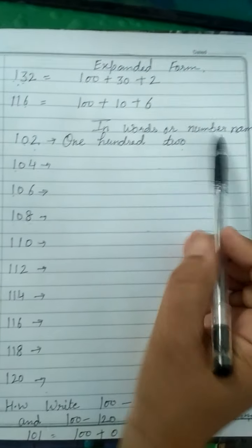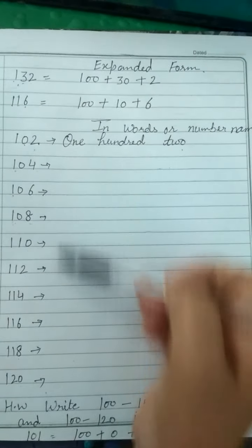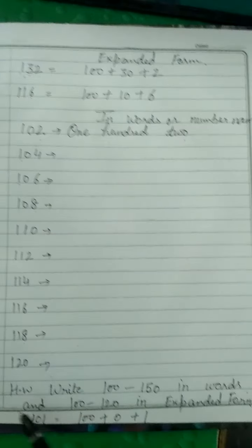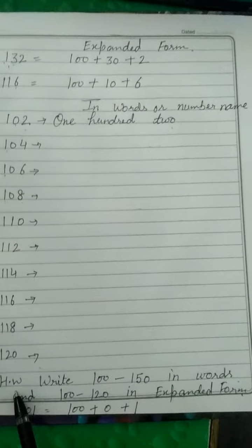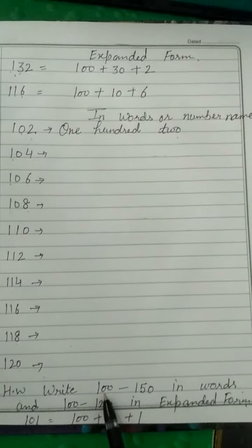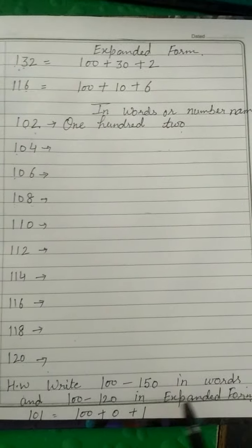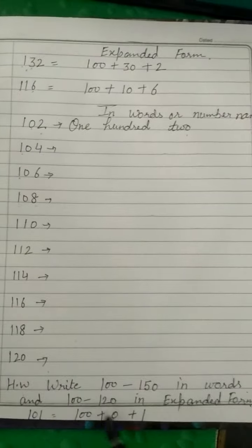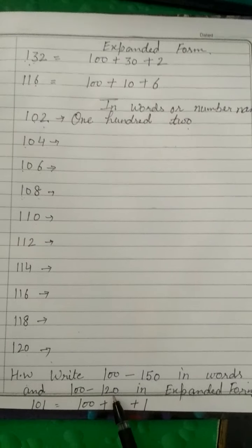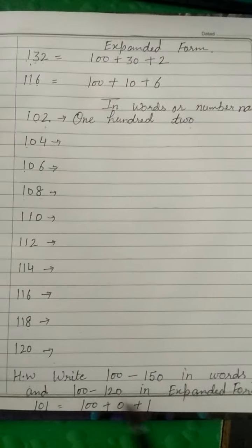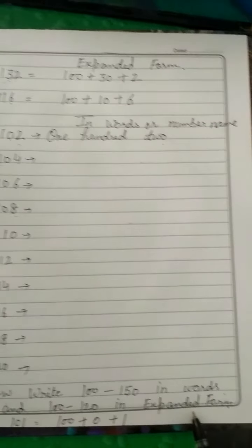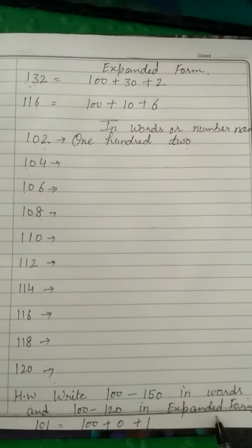Now, you will do practice in your rough notebook. And this is your homework: 100 to 150 numbers, you will write in words. And 100 to 120, you will write in expanded form.